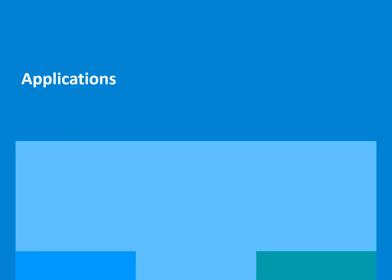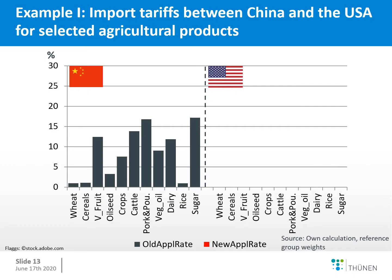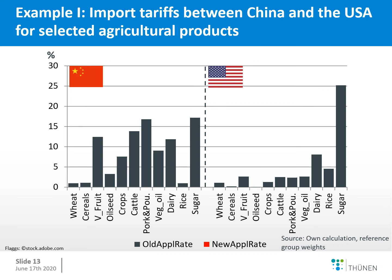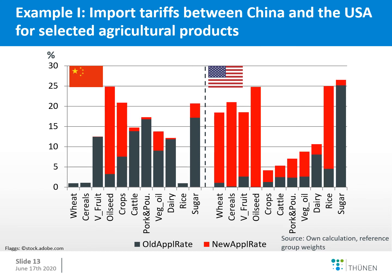I will now show two applications of the TASTE program. This graph shows import tariffs between China and the USA for selected agricultural products. The gray bars show the initial applied tariff rates before the trade conflict for both China and the US. You can see that the US tariff protection structure was initially lower than China's, except for sugar. After several tariff increases, China increased tariffs especially for oil seeds — notably soybeans, which were widely covered in the media — but also for other products.